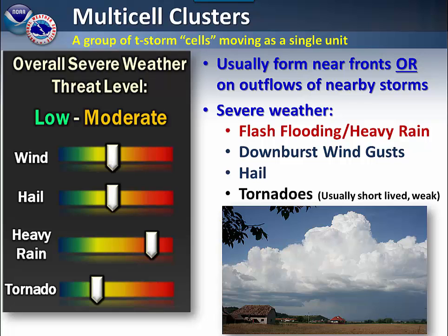A multi-cell cluster of thunderstorms is several storms that move together as a single unit. Typically they will form along fronts or along outflows from nearby thunderstorms. There is more of an increased severe weather threat with these types of storms.